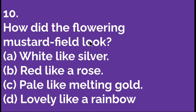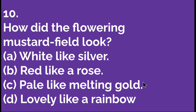How did the flowering mustard look like? Option A: white like silver. Option B: red like a rose. Option C: pale like melting gold. Option D: lovely like a rainbow. As you all have read the chapter, C is the right option — pale like melting gold. So let's move to the next question.